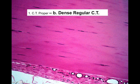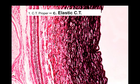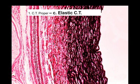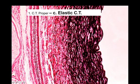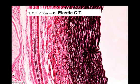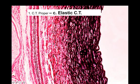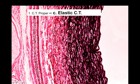Here's another type of connective tissue proper — elastic connective tissue. The elastin fibers run north to south on your screen and are these crinkly fibers here. This is non-distended tissue and it most likely comes from the lining of an artery. Arteries need to expand and contract quite well, as do the bronchial tubes in your lungs, so you'll find elastic connective tissue there.